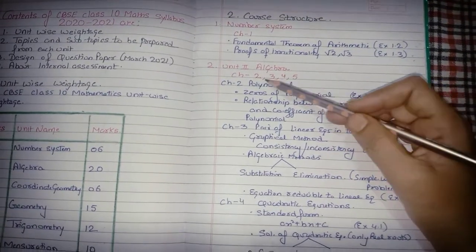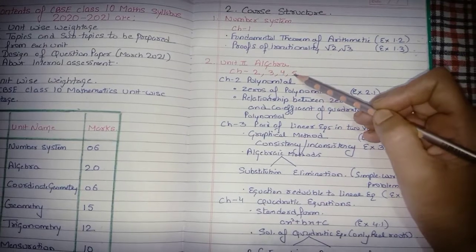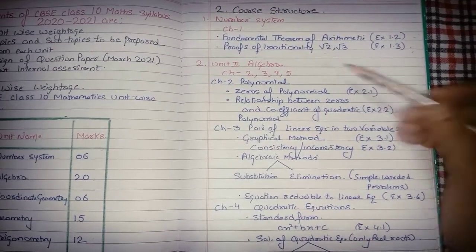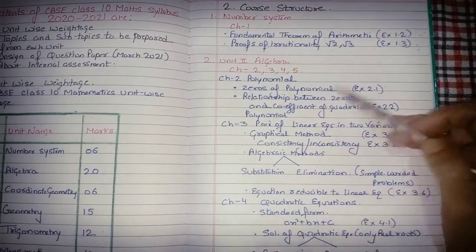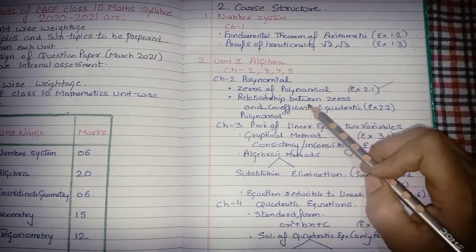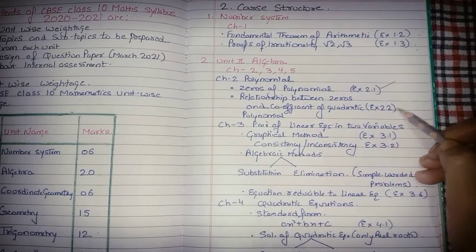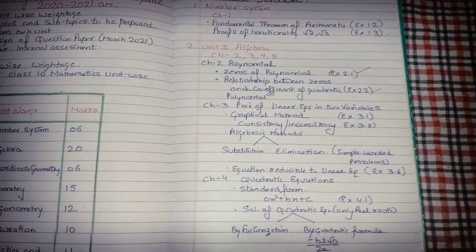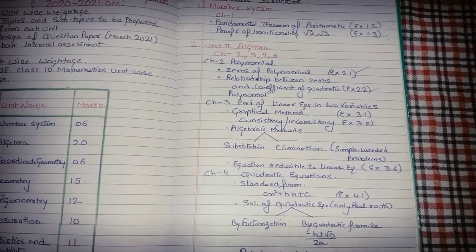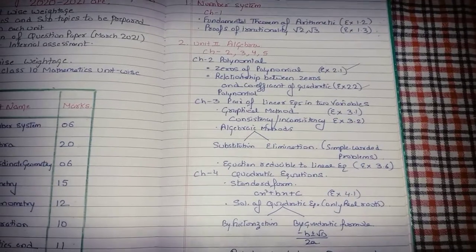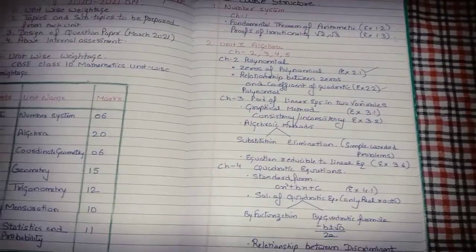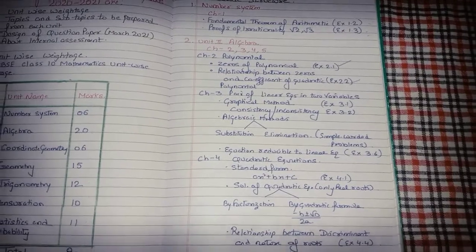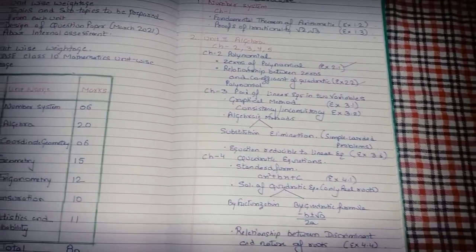Next, the Algebra unit includes 4 chapters: 2nd, 3rd, 4th, and 5th, carrying 20 marks total. For Chapter 2 Polynomials: prepare zeros of polynomial (exercise 2.1) and relation between zeros and coefficients of quadratic polynomial (exercise 2.2). Exercise 2.3 is not required. There is also an optional exercise which I will discuss separately in a later video, marking which questions to do and which to skip.